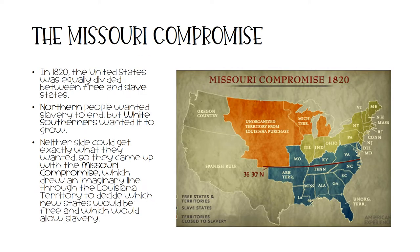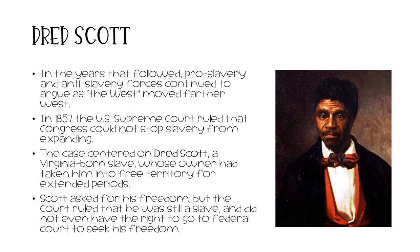In 1820, the United States was equally divided between free and slave states. People in the North wanted slavery to end, but white Southerners wanted it to grow. Neither side could get exactly what they wanted, so they came up with the Missouri Compromise, which drew an imaginary line through the Louisiana Territory to decide which new states would be free and which would allow slavery. In the years that followed, pro-slavery and anti-slavery forces continued to argue as what was known as the West moved farther west. In 1857, the U.S. Supreme Court ruled that Congress could not stop slavery from expanding.